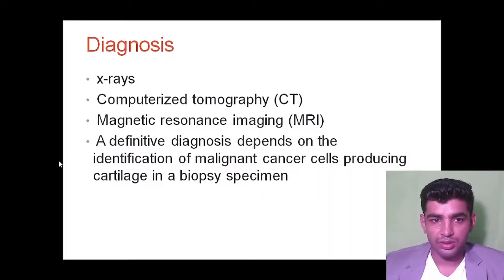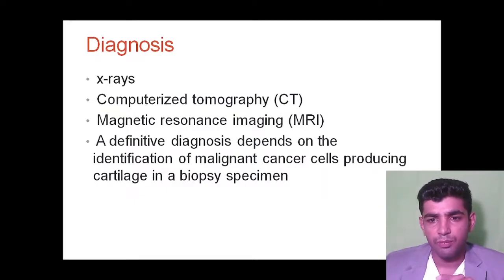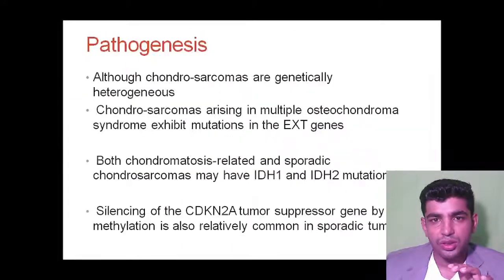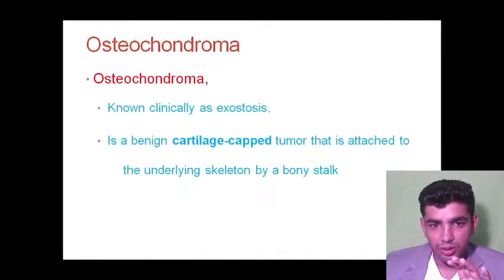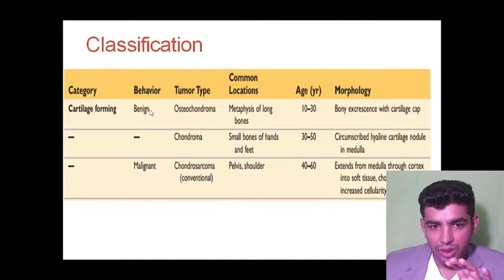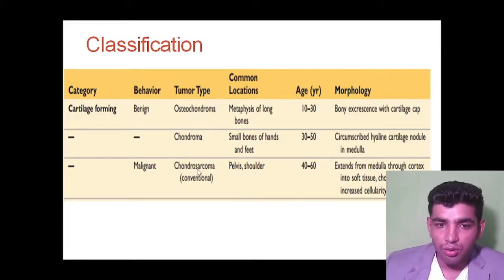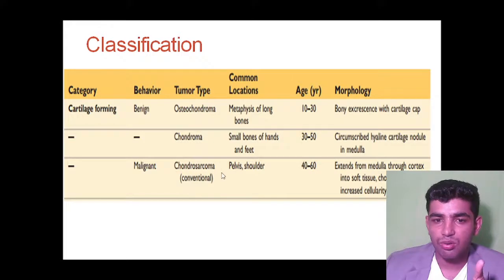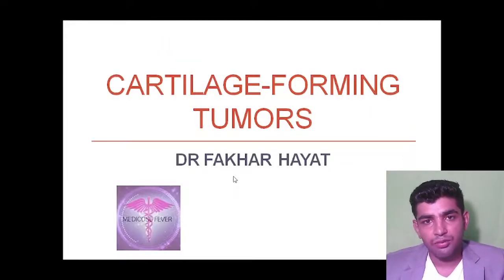Diagnosis includes x-ray, MRI, and CT scan. In summary, we have discussed tumors of the cartilage: benign types osteochondroma and chondroma, and the malignant type chondrosarcoma. Thank you — please like and subscribe to our channel Medico Swimmer, and remember us in your prayers.